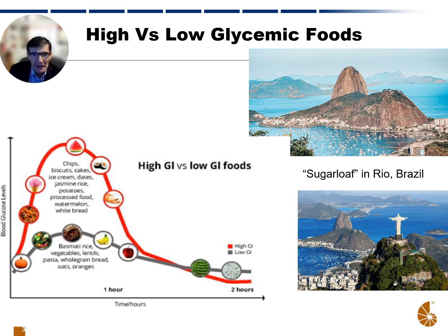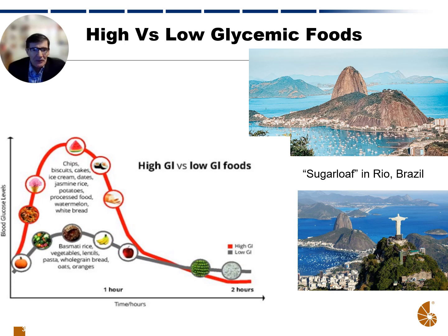When we talk about glucose, we want to talk about the foods that generate sugar in the body, or sugars that you take into the body, and we want to talk about high versus low glycemic foods. So what makes the glucose level spike? If you eat high glycemic foods, the glucose level is going to spike like that red curve on this graph. Those are foods like chips, biscuits, cake, ice cream, dates, jasmine rice, potatoes, processed food, watermelon, and white bread — those shoot your glucose level up.